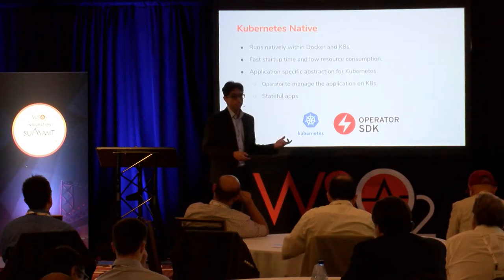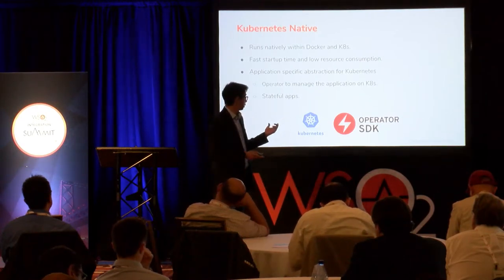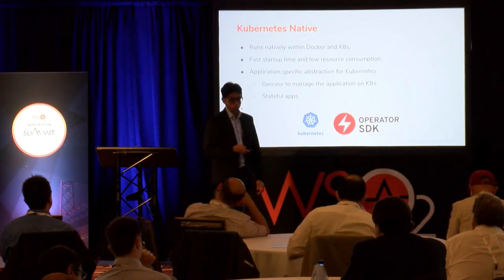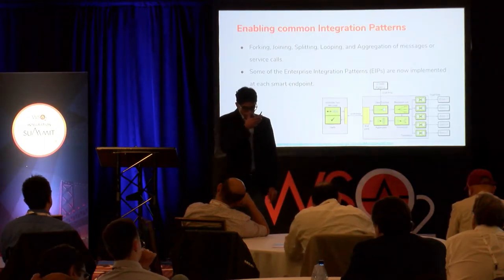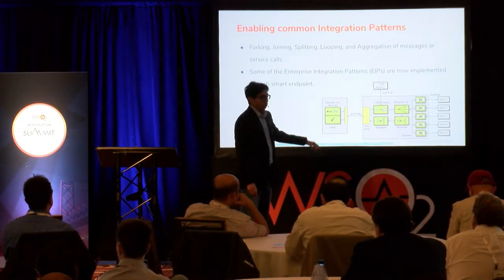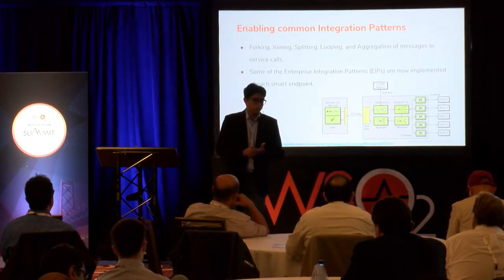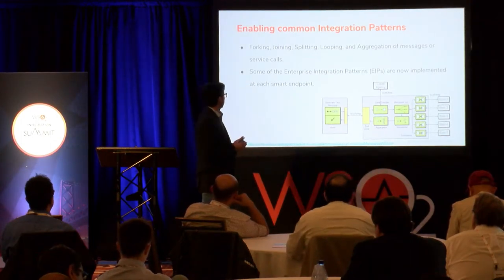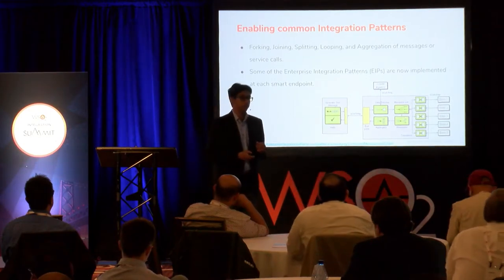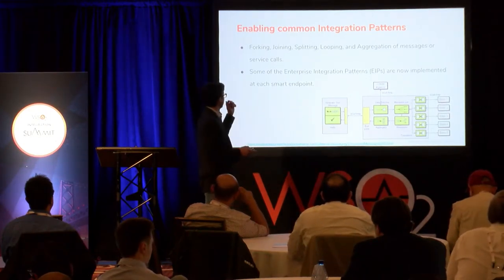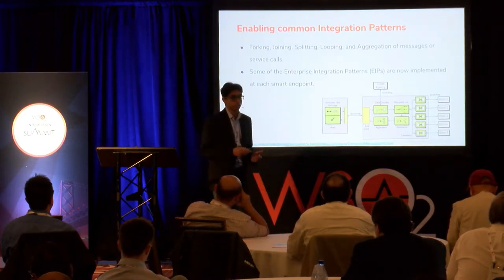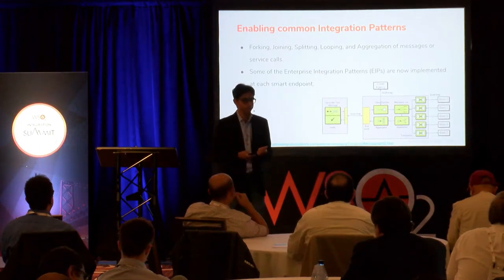When using a cloud-native integration technology, having this kind of Kubernetes-native support is important. If you're from an integration background, you'll be familiar with enterprise integration patterns. Having support for commonly used patterns such as fork-join splitting, looping, and aggregation built into the language is critical, as these are very common use cases in microservices interaction.